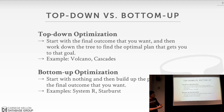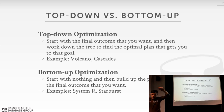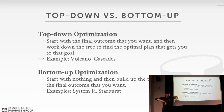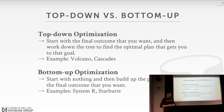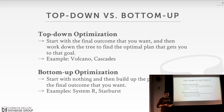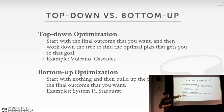In top-down optimization you start with the final outcome you want and work down the tree, doing logical-to-logical or logical-to-physical transformations until you reach the access methods. Bottom-up starts with nothing — the access methods — and builds up the query plan by adding pieces. At a high level these produce roughly equivalent query plans, as the Op++ paper shows. It really comes down to software engineering and maintainability, though the creator of Cascades made a side comment suggesting bottom-up might actually be better.